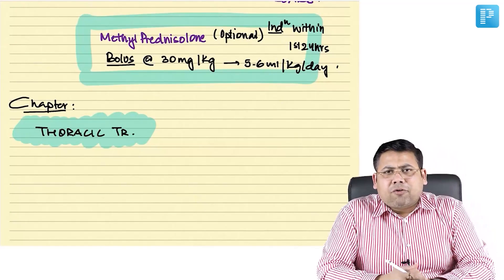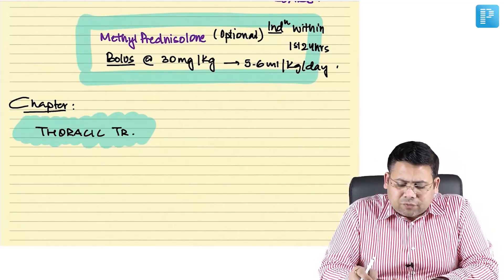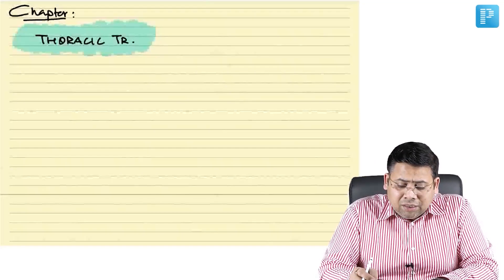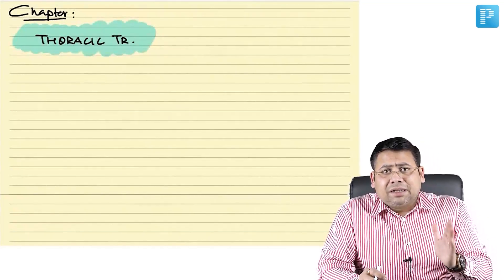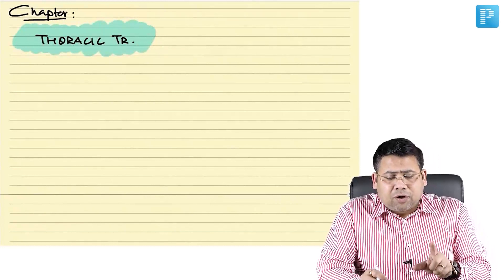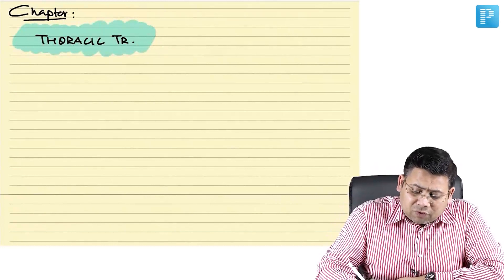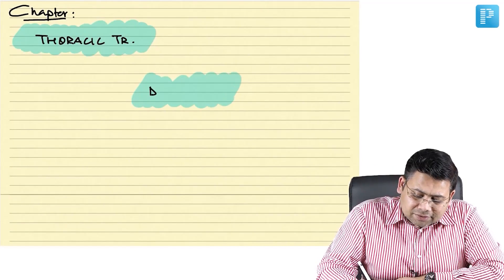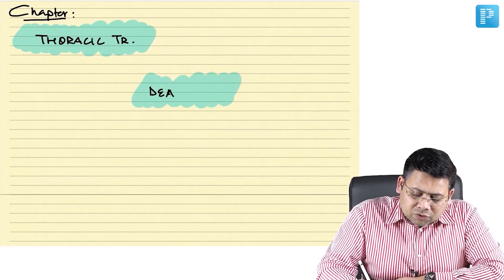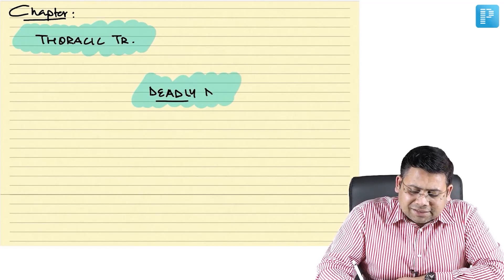When we talk about thoracic trauma, we get two kinds of questions. The first category is: what is considered in thoracic trauma to be life threatening? For that, we have a concept called the Deadly Dozen. So what do you mean by Deadly Dozen?